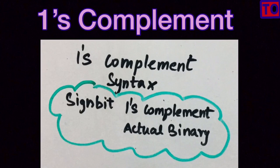First, we will talk about the syntax. The syntax has a Sign Bit, followed by the One's Complement of the Actual Binary. That is what we call Signed Magnitude — Sign Bit followed by the Actual Binary. Here, the Sign Bit is followed by the One's Complement of the Actual Binary.